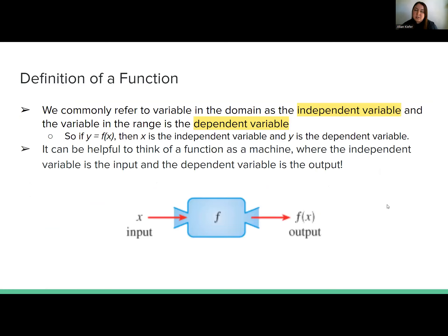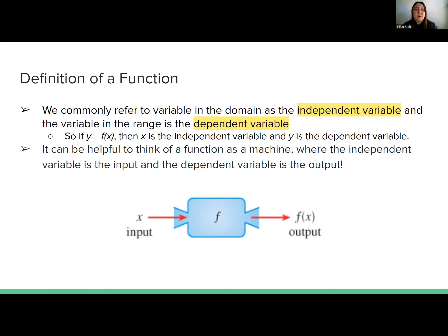Moving forward with our definition: we refer to the variable in the domain as the independent variable, most commonly x. And the variable in the range is the dependent variable, most often y or f of x, g of x, h of x. If we say y is equal to f of x, then x is the independent variable and y is the dependent variable — y depends on whatever x is. That's why in previous sections when we created tables of values, we got to pick x and calculate y, because y depended on whatever x was.